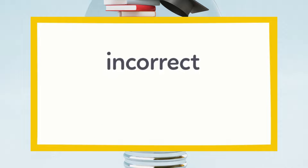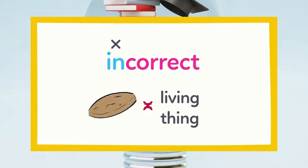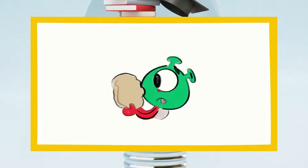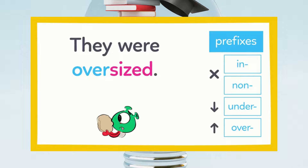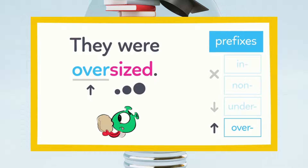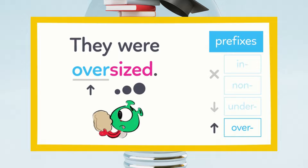Which is incorrect? It is incorrect, or not correct, that a cookie is a living thing. Next, we put too much batter in each cookie, so they were oversized. Oversized means a size too big, because the prefix over means too much. These were way bigger than the normal cookies.